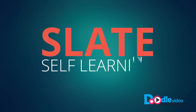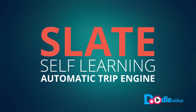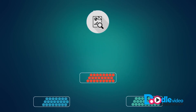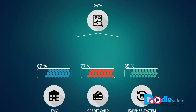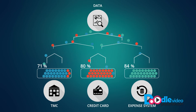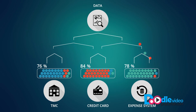Pi's Self-Learning Automatic Trip Engine, or Slate for short, solves this problem. Using machine learning technology and predictive analytics, Slate aggregates all your travel data from all your systems, and then automatically learns and optimises your travel programme based on your preferences.